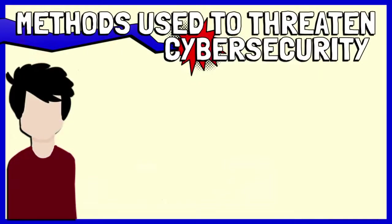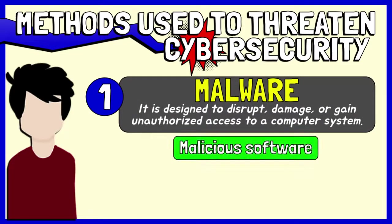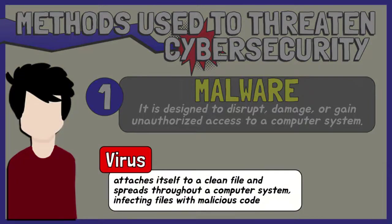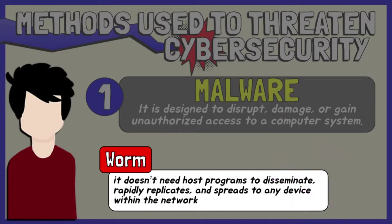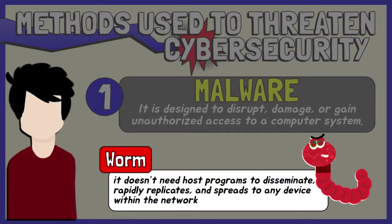Here are some common methods used by perpetrators to threaten cybersecurity. Malware is a contraction for malicious software — software designed to damage and destroy computer systems. There are a number of different types of malware, including virus: malicious software that attaches itself to a clean file and spreads throughout a computer system, infecting files with malicious code. Once downloaded, the virus will lay dormant until the file is opened and in use. Worm is malicious software that rapidly replicates and spreads to any device within the network. Worms do not need host programs to disseminate; a worm infects a device via a downloaded file or a network connection before it multiplies and disperses at an exponential rate.